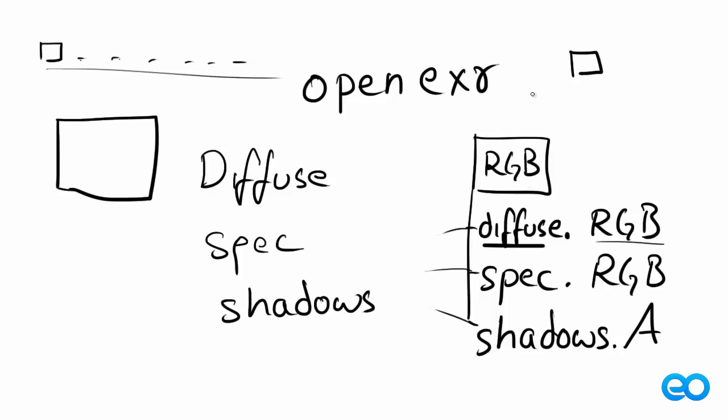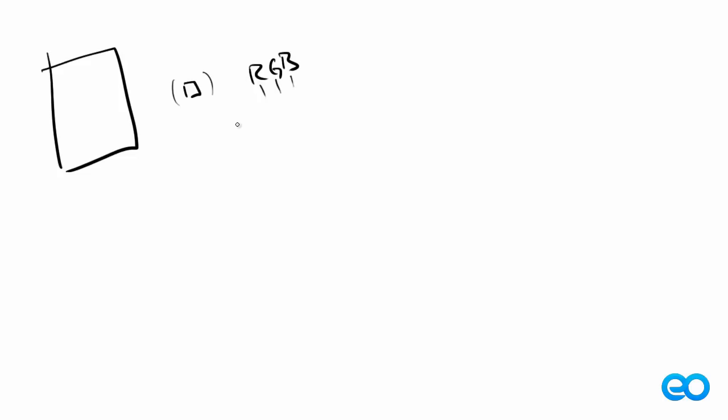So basically, what we have done right now: whenever you have an image, the image is made of pixels, and each one of these pixels stores RGB information. Each R, G, or B is called a channel. The default image which we usually see has the basic RGB channels. When we go deeper and want to store more channels, I can create channel sets, and this channel set can have any number of RGB channels or whatever I need.